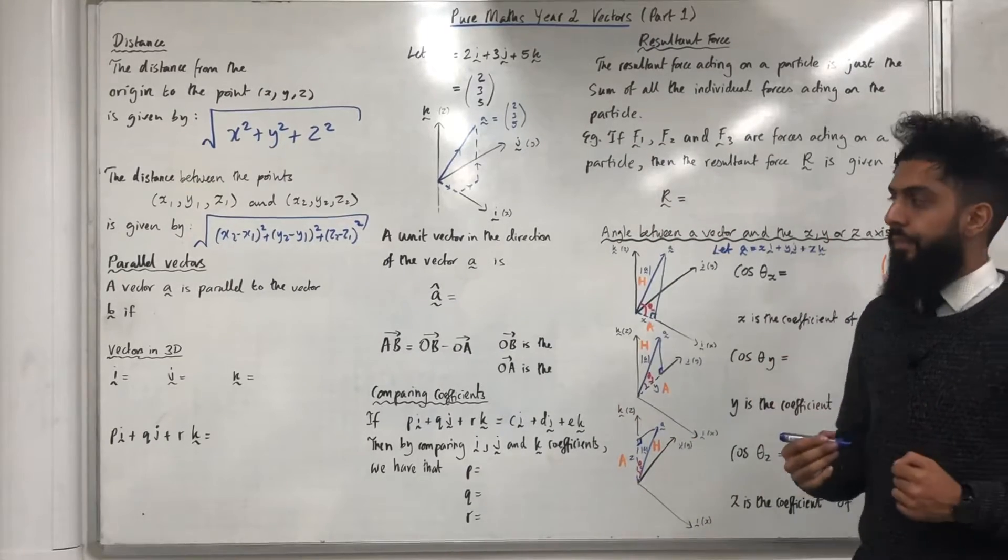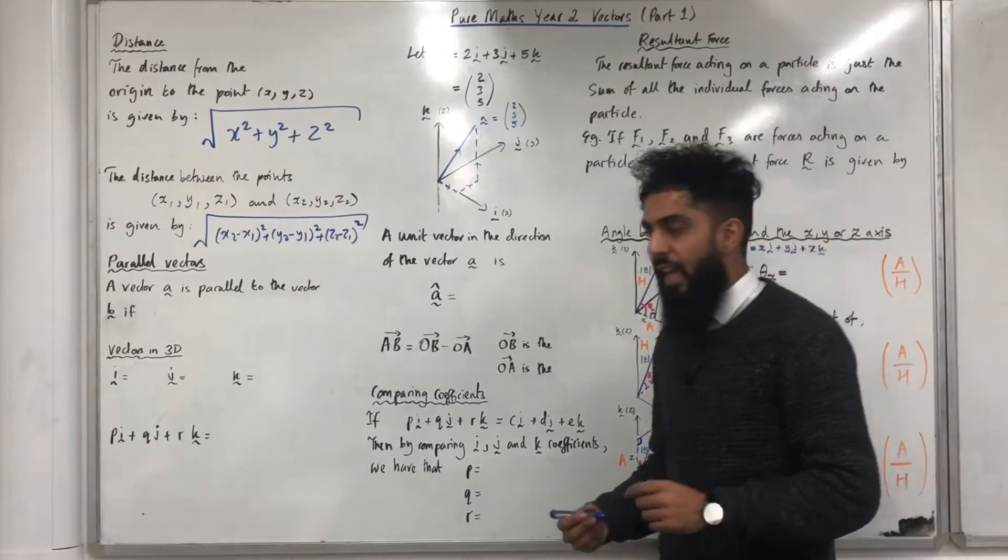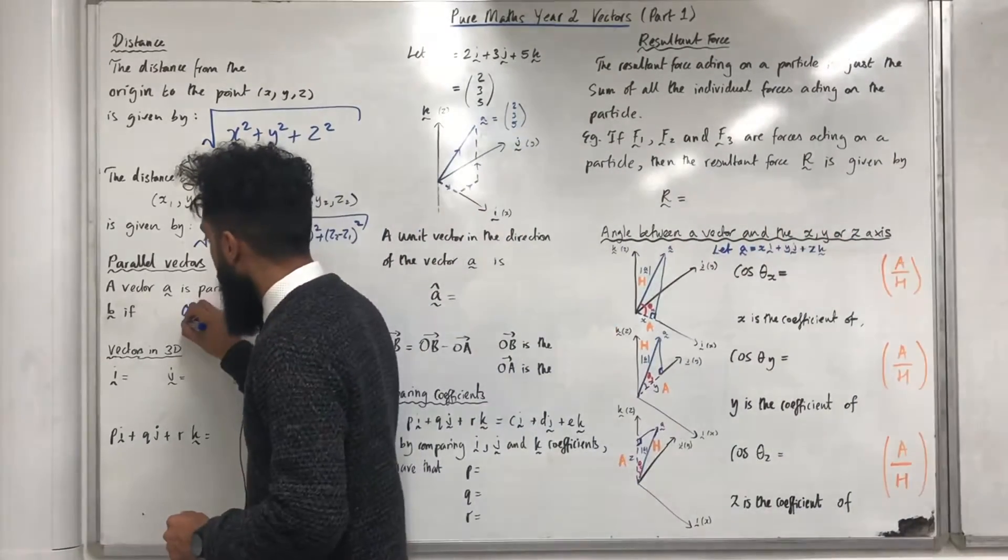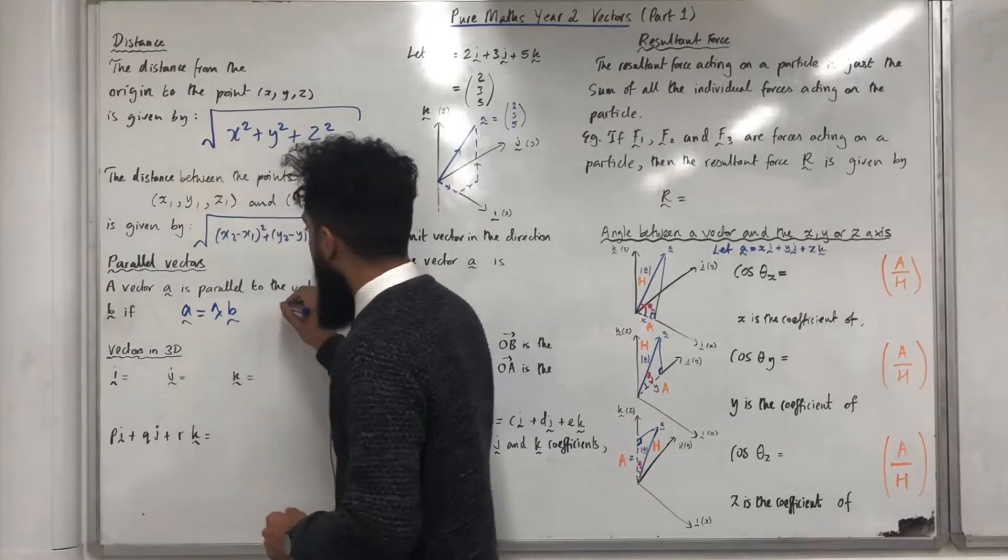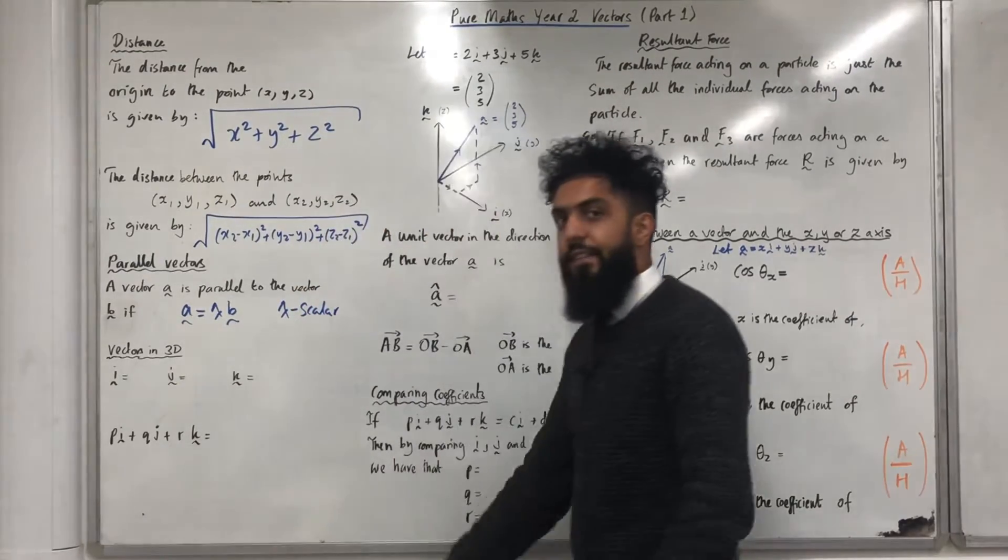Parallel vectors. A vector a is parallel to the vector b if the vector a is equal to lambda lots of the vector b. Lambda is a scalar. In other words, a fixed number.